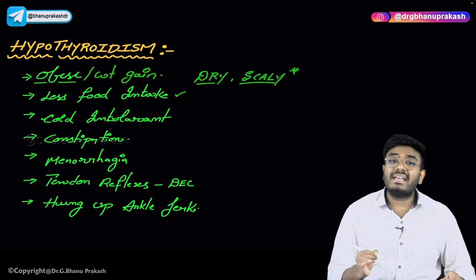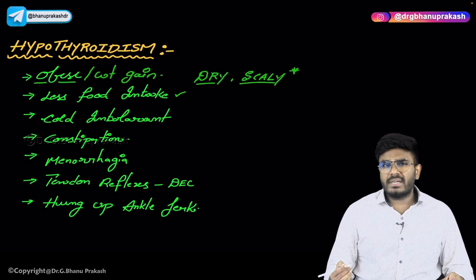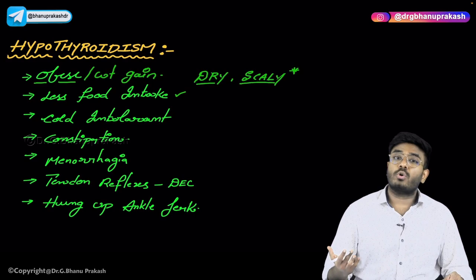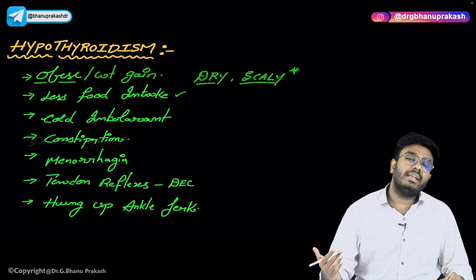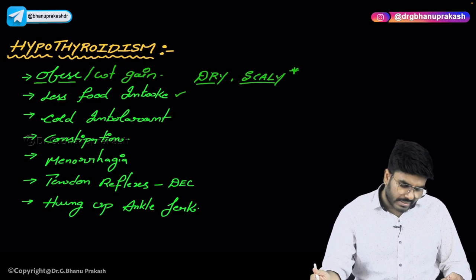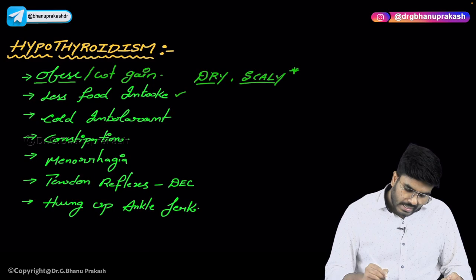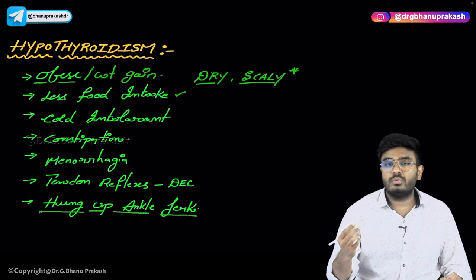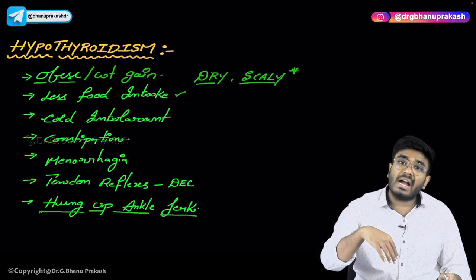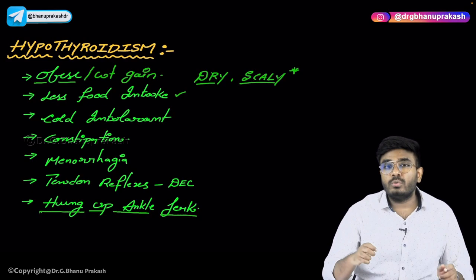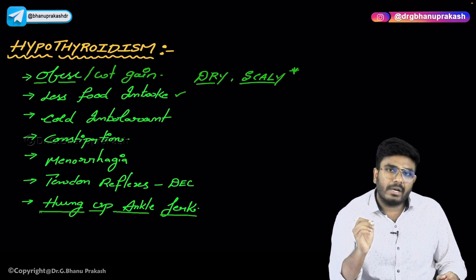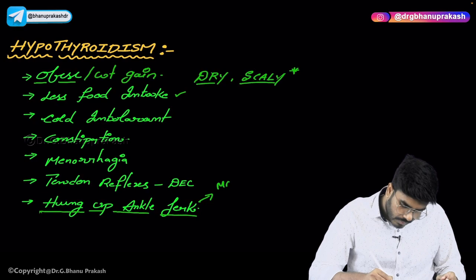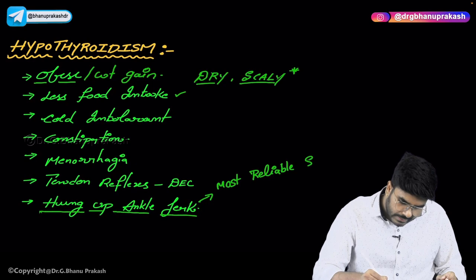Menorrhagia means excessive bleeding. Normally, 50 to 70 ml of blood loss during periods is acceptable. If bleeding exceeds 80 ml, that is considered excessive — menorrhagia. Tendon reflexes in hypothyroidism are decreased. A very important point: hung-up ankle jerk. When you perform the ankle jerk test, the reflex is hung up and delayed. Hung-up ankle jerk is the most reliable sign of hypothyroidism.